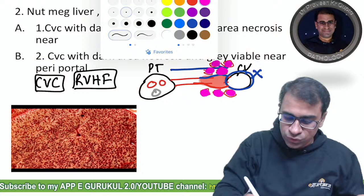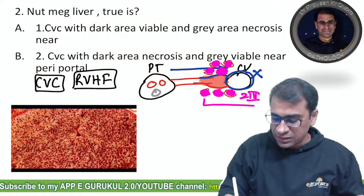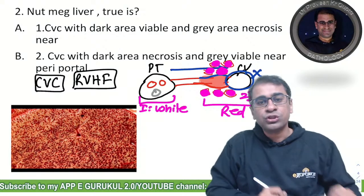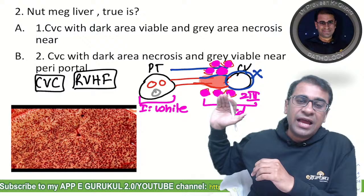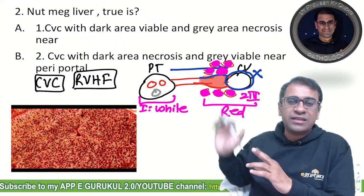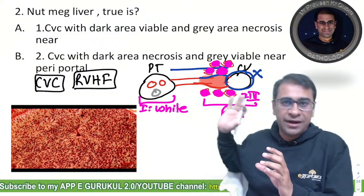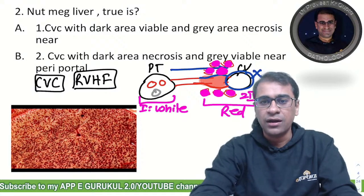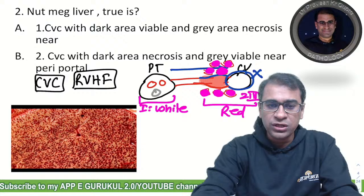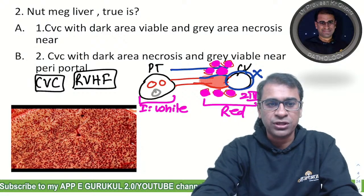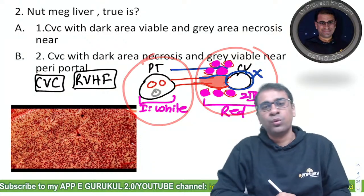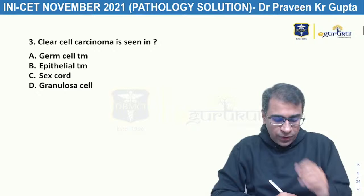All the area around zone 3 starts appearing red due to centrilobular necrosis with sinusoidal dilatation, and zone 1 appears white due to periportal fibrosis. This is what is called nutmeg liver. This is a repeat question — it had come in AIMS before. The white area is the viable area and the red area is the necrosed area. The answer: centrilobular necrosis with sinusoidal dilatation and periportal fibrosis.